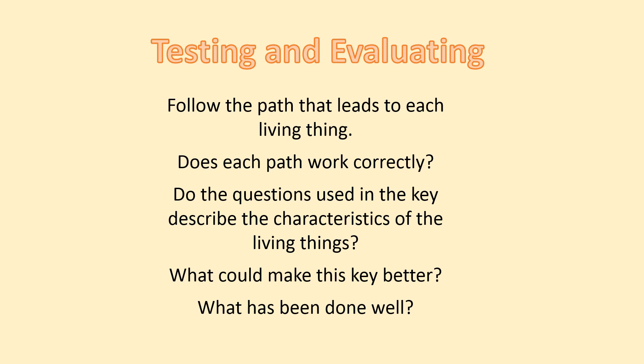When you finish, you have to test and evaluate your key. Follow the path that leads to each living thing. Test: does each path work correctly? Do the questions used in the key describe the characteristics of the living things? Remember, 'is awake' was not a characteristic — nor is 'is cute.' What could make this key better? For me, I could reduce the steps taken to reach the end of the key — maybe ask two questions instead of four to reach the end.